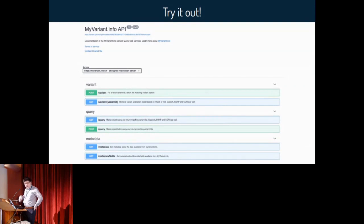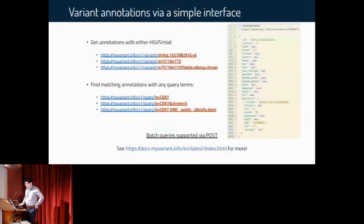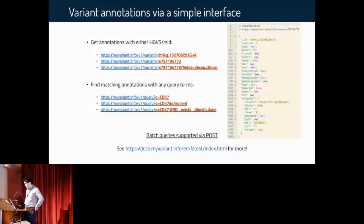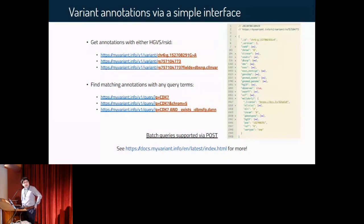This is the query interface. With this simple query interface we can get annotation for a specific variant identified by its HGVS ID or rsID. For example, the first query is going to pull all the annotations for a variant on chromosome 6, and the response is shown on the right. We can see that we combined multiple data sources of annotation. If you're only interested in certain fields, we can append a fields parameter like we did in the third query.